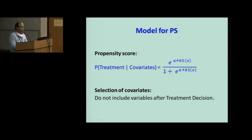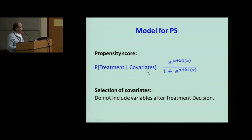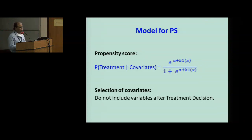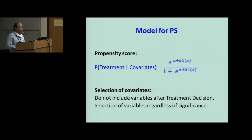Basically, this is a logistic regression model. The outcome here is treatment — yes or no — the new treatment or standard of care, with your covariates as predictors. This gives you the probability. The suggestion is that when computing the propensity score, do not include variables that occurred after the treatment decision — once you have chosen the treatment, don't include any variable that followed after that. Selection of variables should be regardless of statistical significance, so you can have 20 or 30 variables in the propensity score analysis.